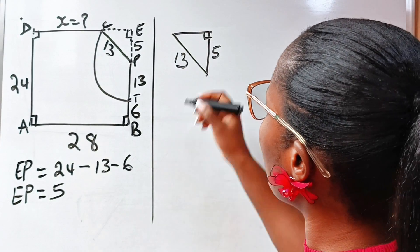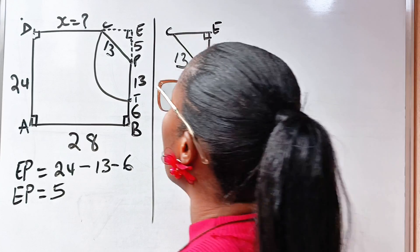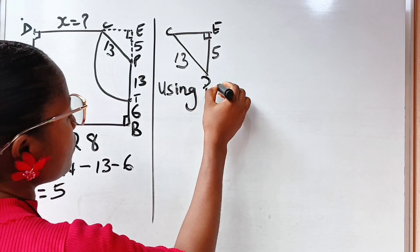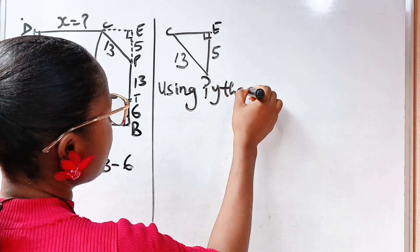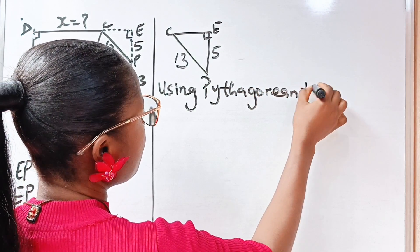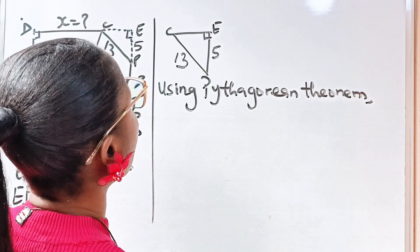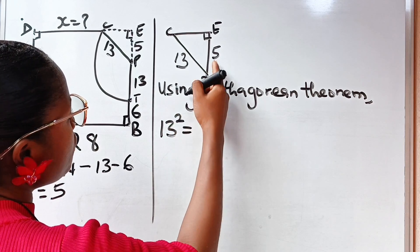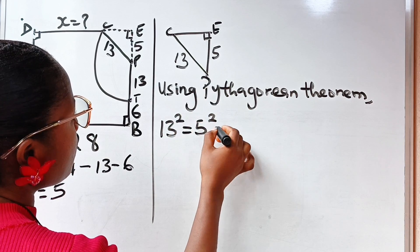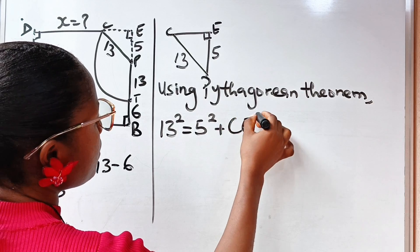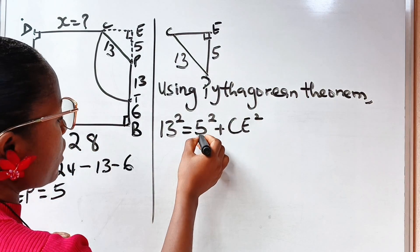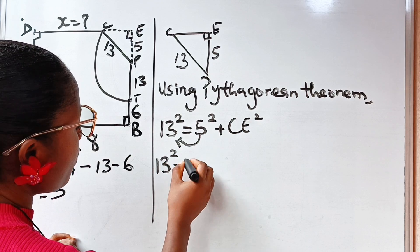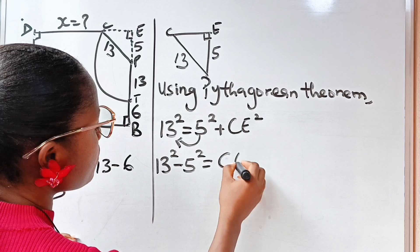Now we are looking for CE. Using Pythagorean theorem, we can see that 13 squared is equal to 5 squared plus CE squared. If we transfer this to this side, we have 13 squared minus 5 squared is equal to CE squared.